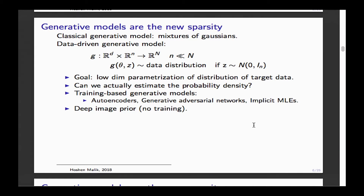You can produce random elements from your data by taking a random Gaussian in a small dimension, applying your G function, and the resulting data looks like your training dataset. People do this using autoencoders, generative adversarial networks, and implicit MLE. There are also techniques that use neural network architecture as a prior without any training.